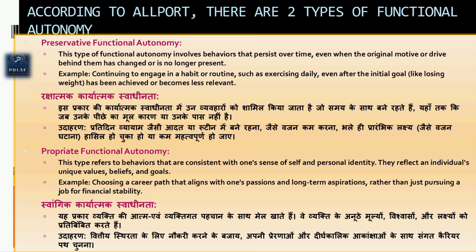Propriate Functional Autonomy: यह प्रकार व्यक्ति की आत्म एवं व्यक्तिगत पहचान के साथ मेल खाता है। वे व्यक्ति के अनूठे मूल्यों, विश्वासों और लक्ष्यों को प्रतिबिम्बित करते हैं। उदाहरण: वित्तीय स्थिरता के लिए नौकरी करने के बजाए, अपनी प्रेरणाओं और दीर्घकालिक आकांक्षाओं के साथ संगत करियर चुनना।